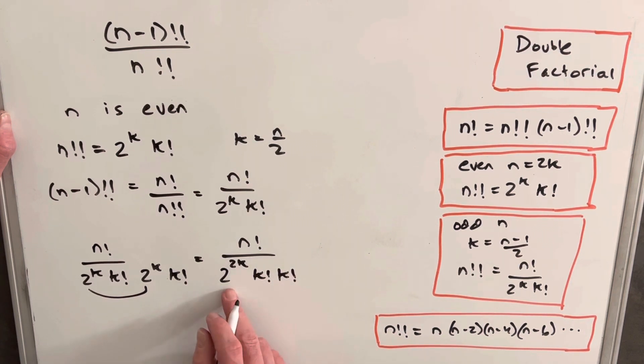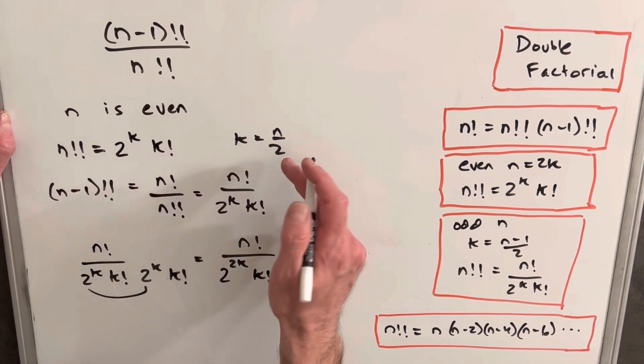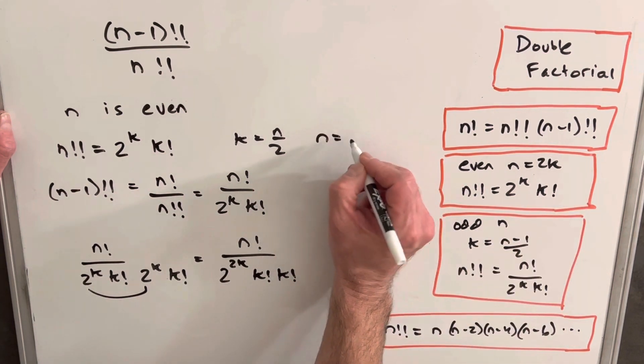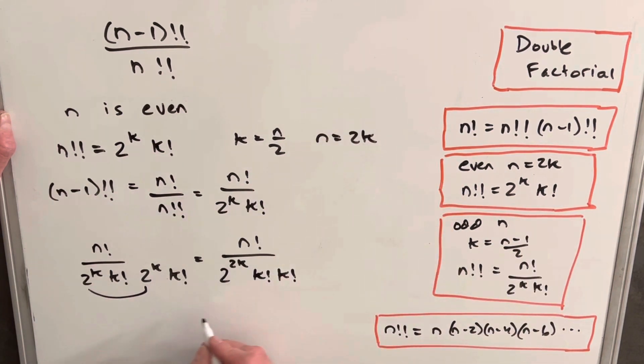But 2k, if k is n over 2, or this definition, n is just 2k, so we can write this as n factorial 2 to the n k factorial k factorial.